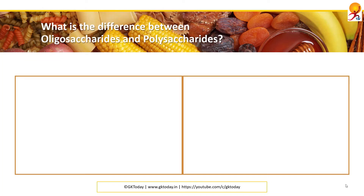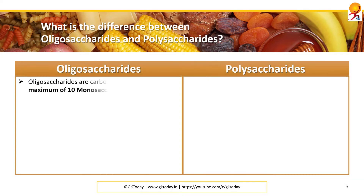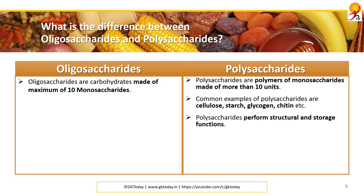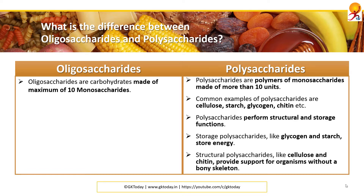What is the difference between oligosaccharides and polysaccharides? Oligosaccharides are carbohydrates made of a maximum of 10 monosaccharides, whereas anything more than 10 is a polysaccharide. Common examples of polysaccharides are cellulose, starch, glycogen, chitin, etc. They perform structural and storage functions. Storage polysaccharides include glycogen and starch, which store energy, and structural polysaccharides like cellulose or chitin provide support for organisms that do not have a bony skeleton.